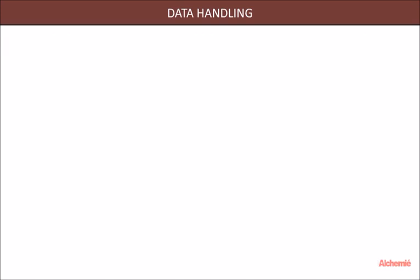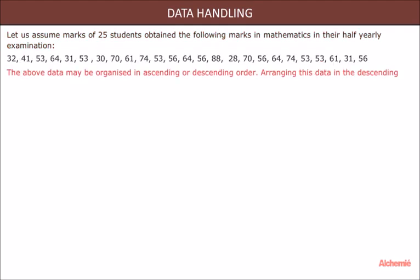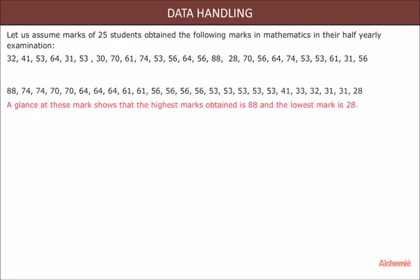Let us assume marks of 25 students obtained the following marks in mathematics in their half yearly examination. The above data may be organized in ascending or descending order. Arranging this data in descending order: A glance at these marks shows that the highest marks obtained are 88 and the lowest marks are 28.